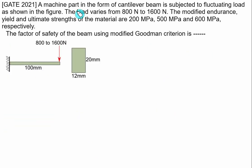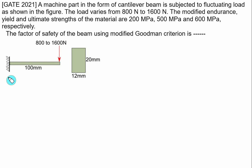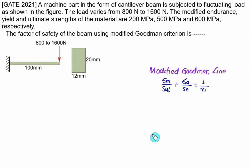A machine part in the form of a cantilever beam is subjected to fluctuating load from 800 to 1600 Newton. The transverse load produces bending stress, maximum at the fixed end. The modified endurance, yield, and ultimate strengths are 200, 500, and 600 MPa respectively. The factor of safety is to be calculated using the Goodman criteria. The Goodman equation is mean stress divided by SUT plus amplitude divided by SE equals 1 by N. SE equals 200 MPa and SUT equals 600 MPa.